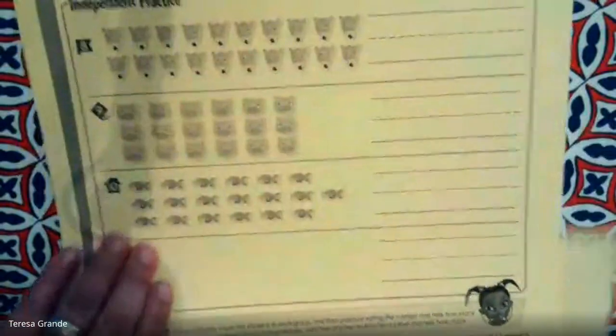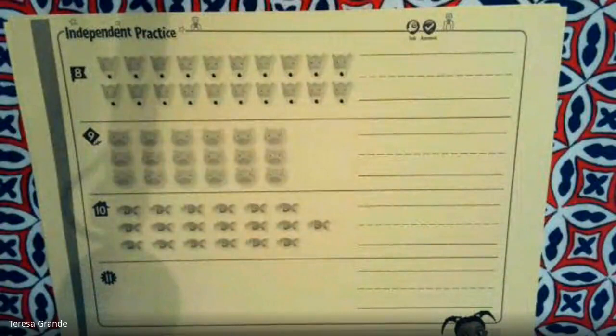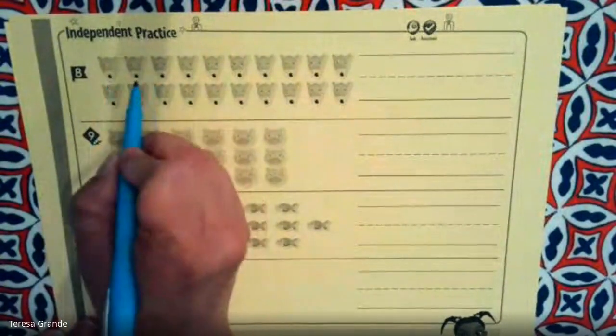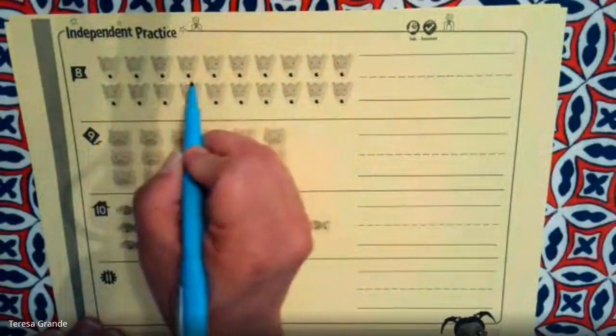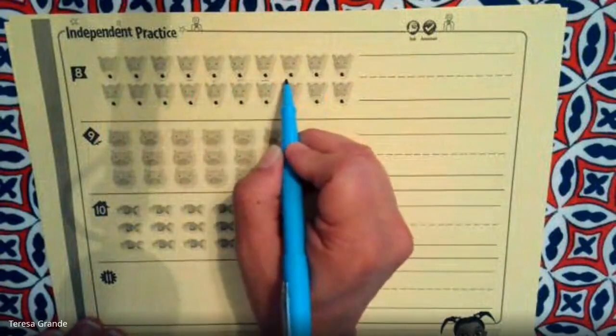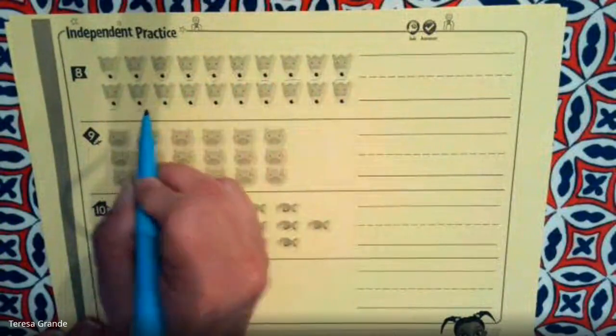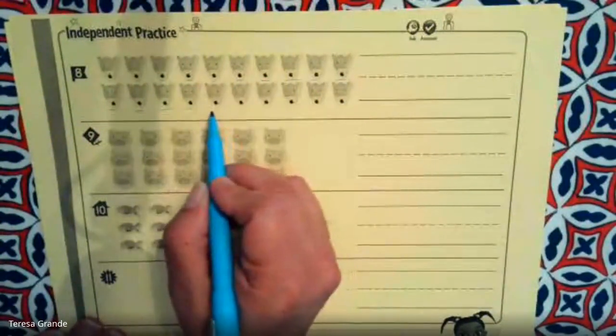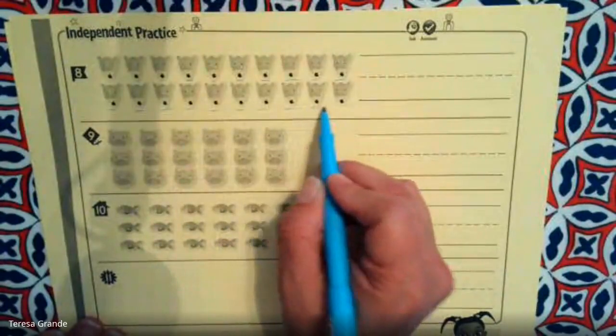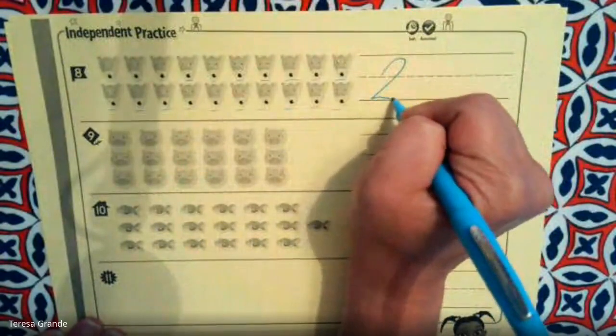Now, let's count and we will write either the number 18, 19, or 20. Let's count. 1, 2, 3, 4, 5, 6, 7, 8, 9, 10, 11, 12, 13, 14, 15, 16, 17, 18, 19, 20. Let's write the number 20.